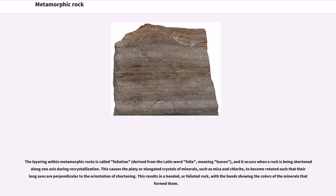The layering within metamorphic rocks is called foliation, derived from the Latin word folia, meaning leaves, and it occurs when a rock is being shortened along one axis during recrystallization. This causes the platy or elongated crystals of minerals, such as mica and chlorite, to become rotated such that their long axes are perpendicular to the orientation of shortening. This results in a banded, or foliated rock, with the bands showing the colors of the minerals that formed them.